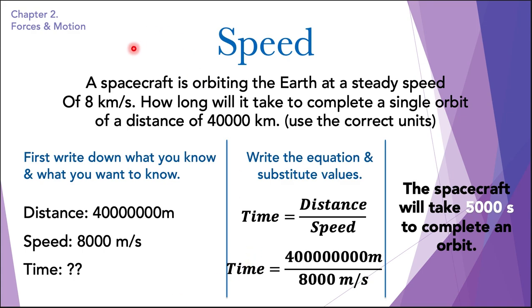Here is a more complicated question. A spacecraft is orbiting the earth at a steady speed of 8 kilometers per second. How long will it take to complete a single orbit of 40,000 kilometers? Use the correct units. The units given are not correct — we always use meters per second. Since the distance is also given in kilometers, we need to convert everything into meters, using our knowledge of unit conversion from the previous chapter.